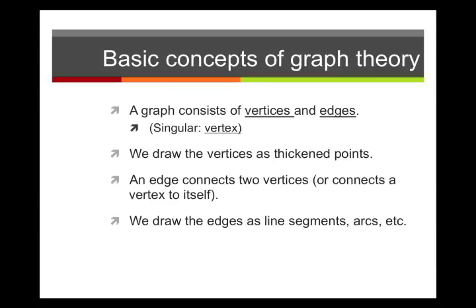In mathematics, a graph consists of vertices and edges. The singular of the word vertices is a vertex, so we say one vertex, two vertices, three vertices, and so on. Vertices are just points—when we draw them, we draw them thickened so that we can see them on our piece of paper. An edge is simply a way of connecting two vertices, or sometimes it connects a vertex to itself. When we draw an edge, we draw it however we find it convenient, typically as a line segment, sometimes as an arc or some other kind of curve.